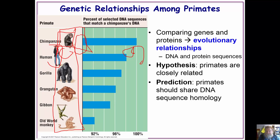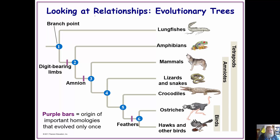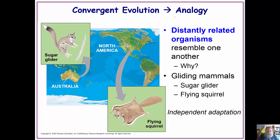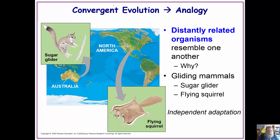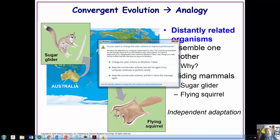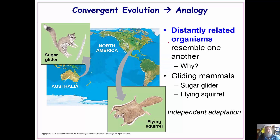We will look at evolutionary trees a little bit later on. Convergent evolution is where two organisms end up looking like one another. Looking at what an organism looks like isn't always going to tell us their relationship, because two organisms that perform the same activities or inhabit the same niche are going to look similar to one another — so I'm just giving you a warning on that.